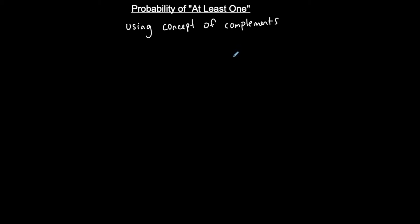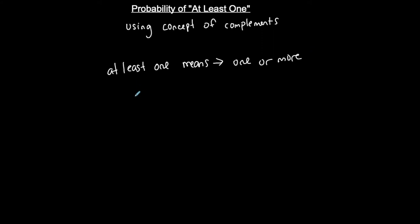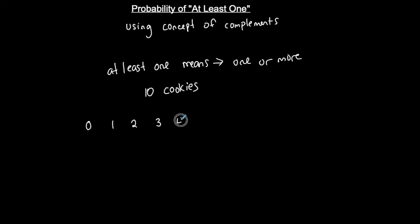Let's talk about 'at least one.' What does at least one mean? At least one means one or more. Let's say I have 10 cookies. I can either eat zero cookies, I can eat exactly one, exactly two, exactly three, exactly four, exactly five, or six, seven, eight, nine, or ten cookies. These are all the different scenarios — all the different outcomes.